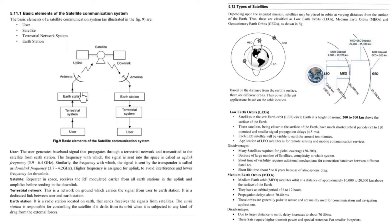The basic element of satellite communication system is shown in this figure. It consists of user, satellite, terrestrial network system, and earth station. Now let us understand these elements one by one.